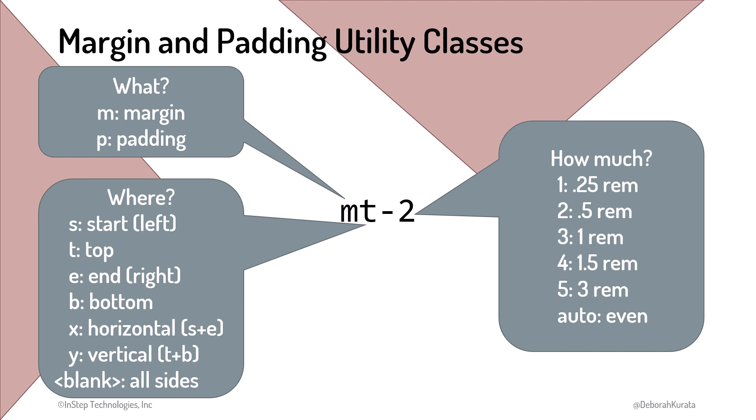The third character is how much. The specified number is some percentage of the Bootstrap spacer, which by default is one rem, or 16 pixels. So, opposite of the font size, one is the smallest size, and five is the largest size. Specifying one is a quarter of a rem, two a half a rem, three is one rem, and so on as shown. There is also a value of auto, which tells the browser to set a suitable margin to fill the available space.